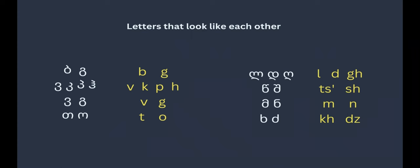Now let's see the letters that look like each other. The first ones I believe that B and G look like each other. The difference is that B goes up and the top is different, and G goes down and also the top is different. It's round, it looks like English G. Then V and H look like each other.